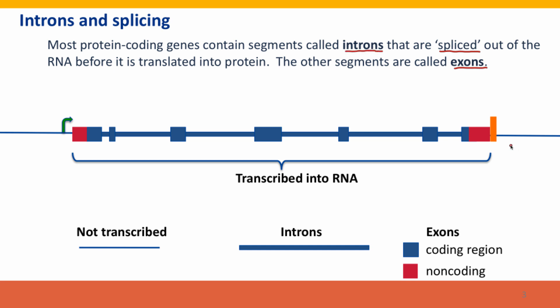Here's a diagram of a fairly typical gene. Here's the DNA, here's the regulatory signals for transcription, the promoter, the terminator, and here's what's transcribed into RNA. But only some of this codes for protein. In particular, there are long segments called introns that don't code for protein at all, and they have to be cut out and discarded. There are shorter segments, typically, that do code for proteins, and they have to be joined together when the other segments are cut out.